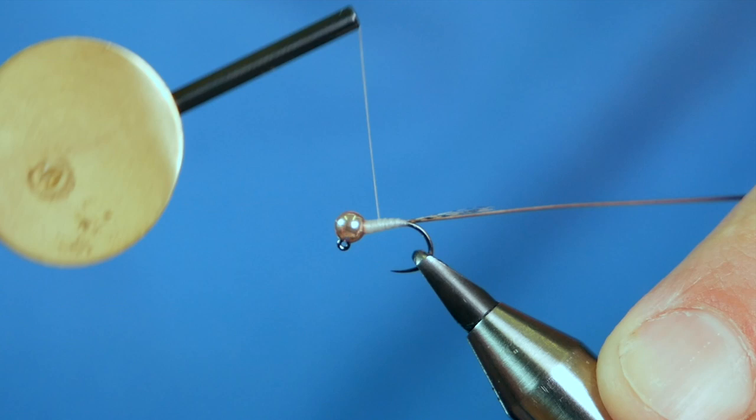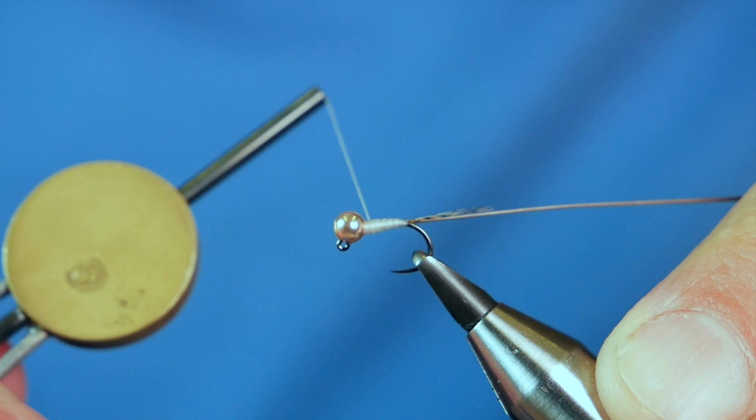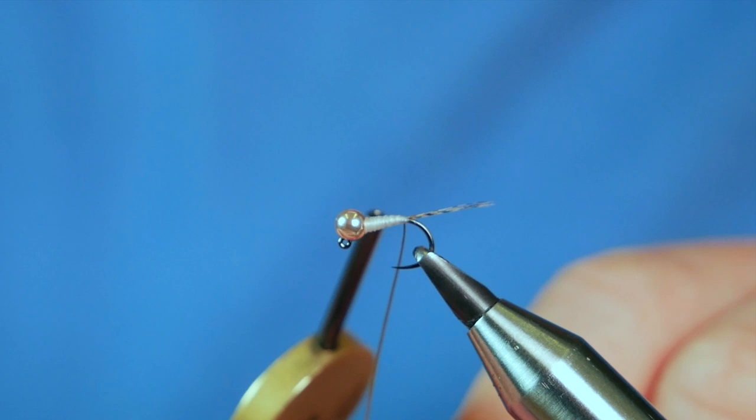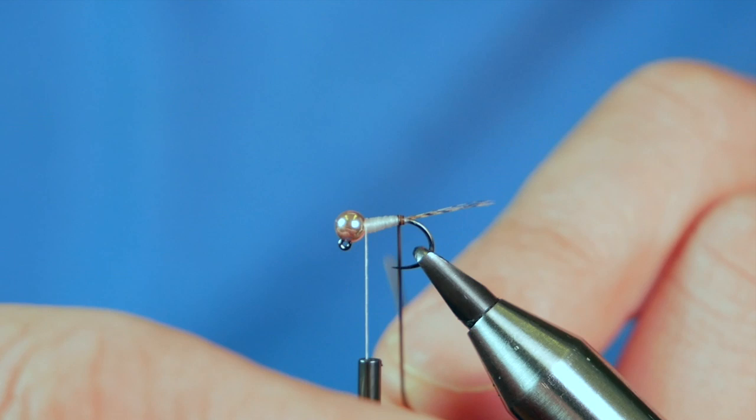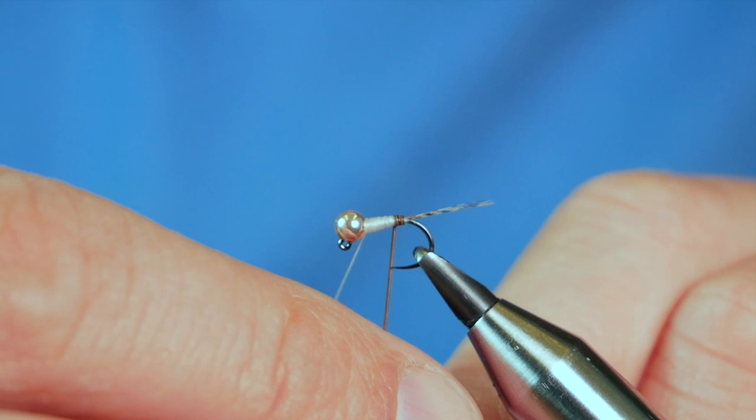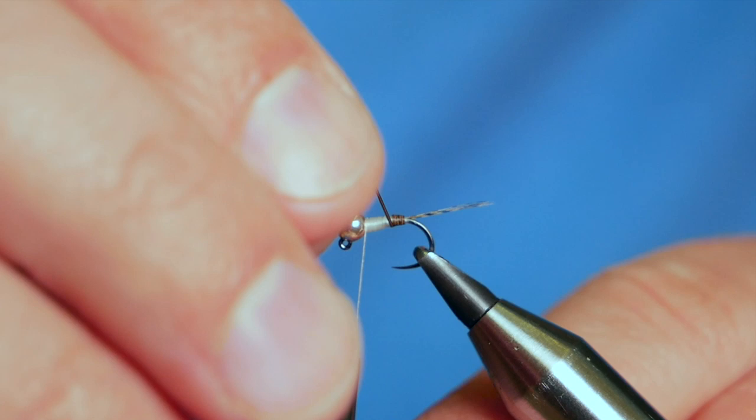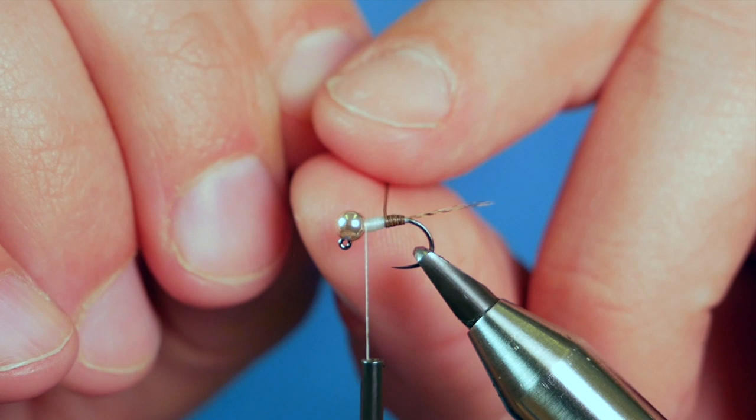So I'm fairly happy with that taper. And now I'm going to bring my stripped Peacock Herl around the body. Just take your time with this. You want to try and get touching turns all the way up the body of the fly. Now if you're not confident in getting these touching turns, what you can do with a Vivas thread is color the thread with a Pantone marker. So you can make it brown, black, whatever you like. And that will hide any mistakes in your tying.